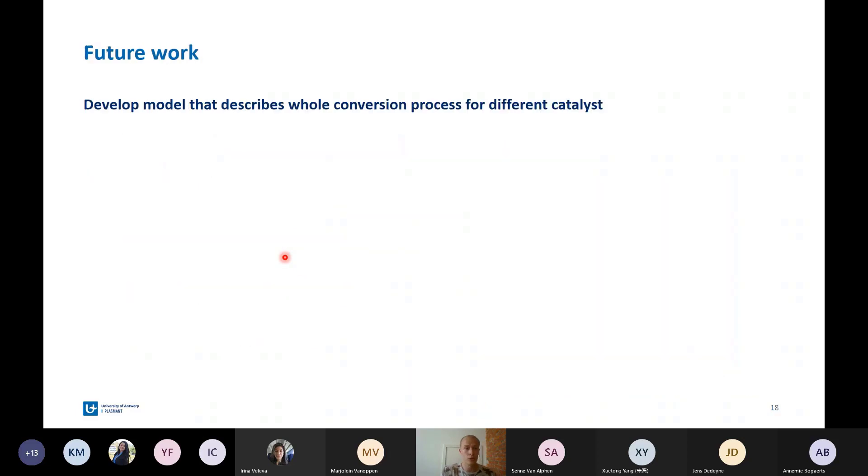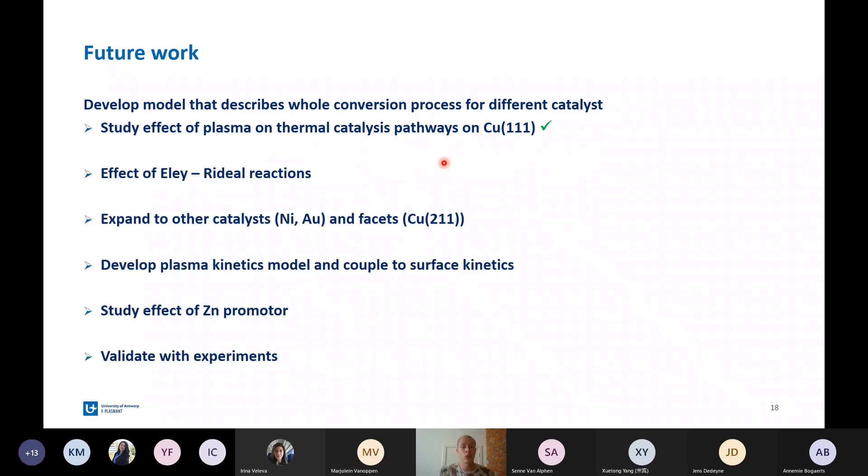Of course, my model can be further improved. The first step I already did, develop a simple model to study the effects of the plasma on thermal catalysis pathways. Next, I will include the Eley-Rideal reactions. I will expand the model to other catalyst surfaces like nickel and gold. I will develop a plasma kinetics model, so the plasma chemistry is included in the model, and we are not only looking at the surface reactions. I will study the effects of a zinc promoter, and I will validate my model with experiments.